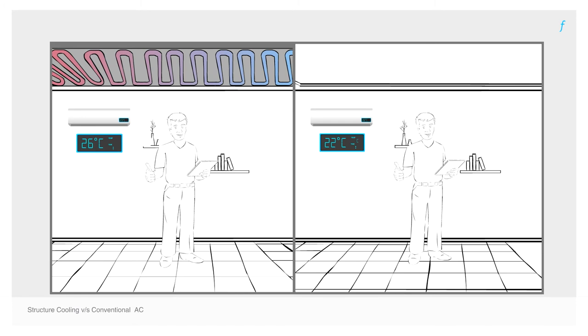Compare this with an air conditioner in a structure cooled room. Here, setting the air conditioner at a relatively higher temperature will still sufficiently comfort the occupants. Use of structure cooling along with conventional air conditioners reduces the burden of cooling and hence the energy consumption from conventional systems.